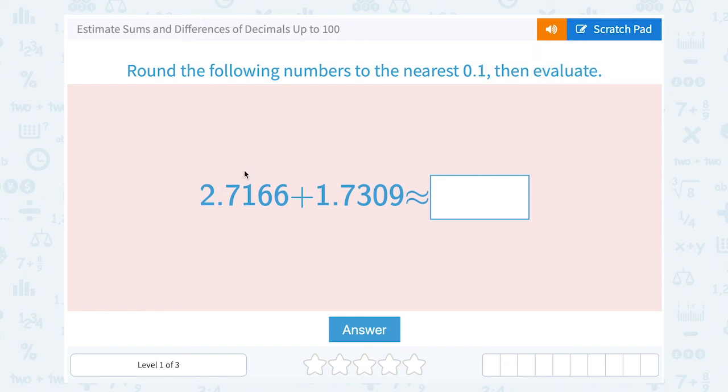Okay, we have 2.7166 plus 1.7309, and we want to know what it's approximately equal to. Notice that squiggly equal sign means about equal to or approximately equal to. And that's just what we use when we're estimating.